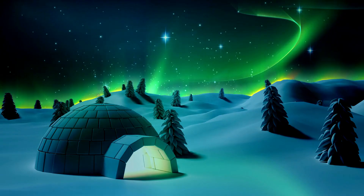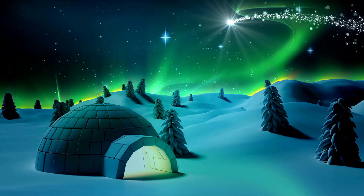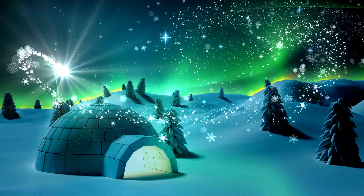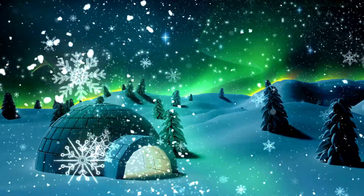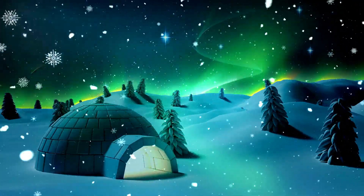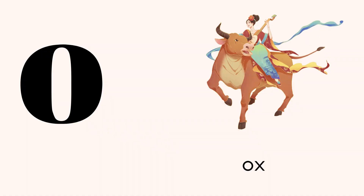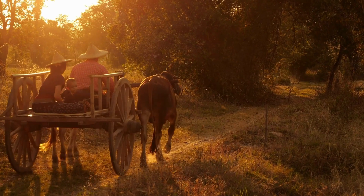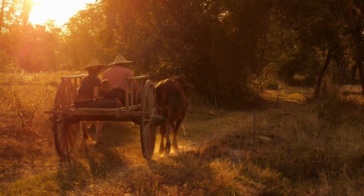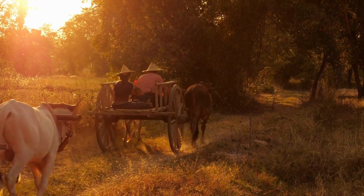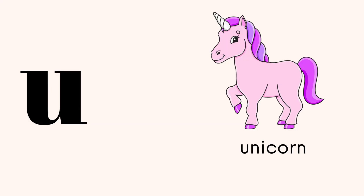I for igloo। I हमारा क्या है vowel? ठीक है बच्चो, इसके बाद आएगा हमारा next — O। O for ox। O क्या है हमारा vowel? O for ox।